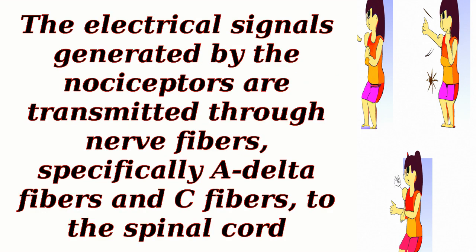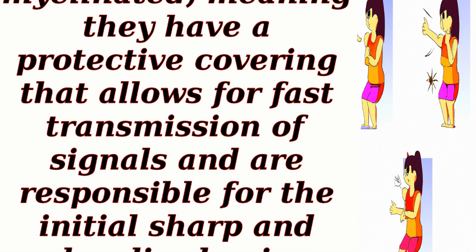The electrical signals generated by the nociceptors are transmitted through nerve fibers, specifically A-delta fibers and C-fibers, to the spinal cord. A-delta fibers are myelinated, meaning they have a protective covering that allows for fast transmission of signals and are responsible for the initial sharp and localized pain sensations.